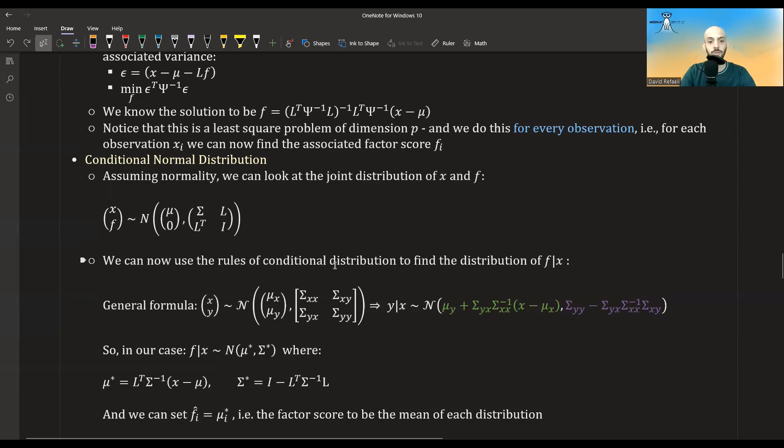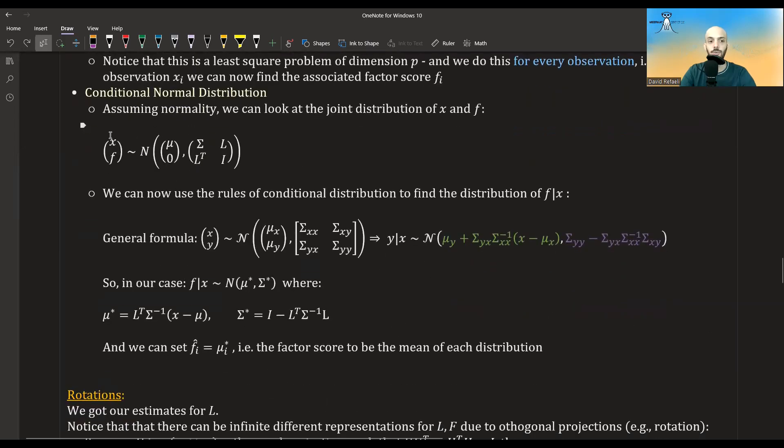So now we can use the rules of conditional distribution to find the distribution of f given x. So the general formula when we have two vectors that distribute multivariate normal is that the conditional of y given x will be equal to this thing over here. If we now apply this to our matrix, we will get that f given x distributes normal with this mean and this covariance matrix. And so now we can just set the estimates that we have for f to be the mean value of this distribution. And again, we have to do this for each observation, but this is just one matrix. This we can expand to be a matrix, and then it's just two matrix multiplication, and we get the whole factor scores.